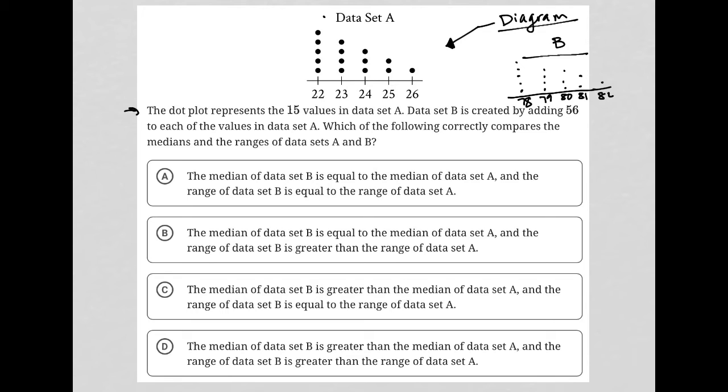Answer choice A says the median of data set B equals the median of data set A—definitely not. Choice B also says equal—definitely not. Choice C says the median of data set B is greater—that's good. Choice D also says the median of B is greater, so that part is good.